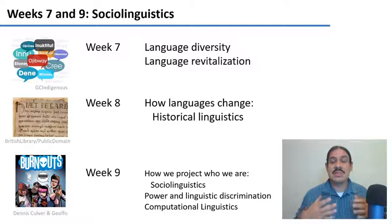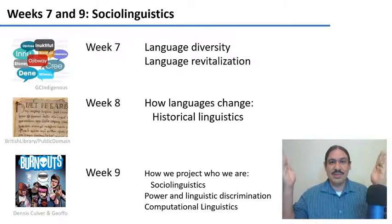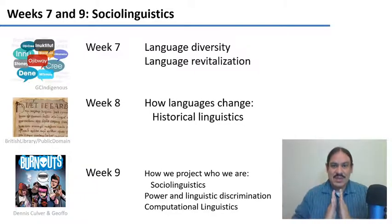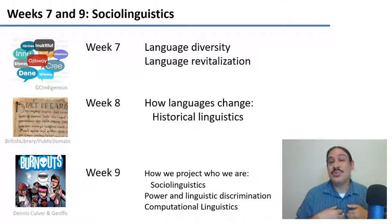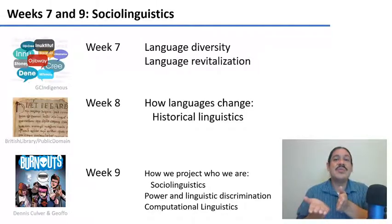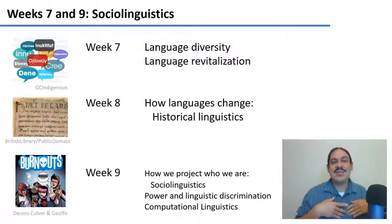On week eight, we will study how languages change — this is called historical linguistics. And on week nine, we'll bring our focus from the global to the individual, to how we make decisions to project what kind of person we are, how we make our persona. This process is also called sociolinguistics. The personal decisions that we make have repercussions for how languages evolve and change, and for how language diversity is expressed in the world.